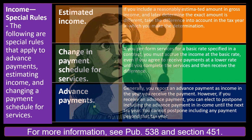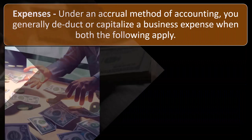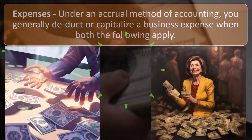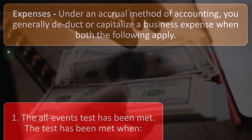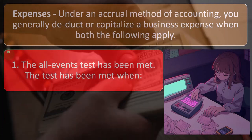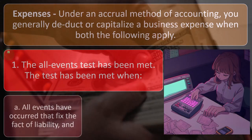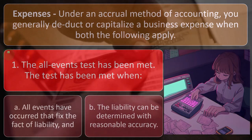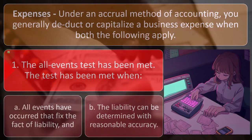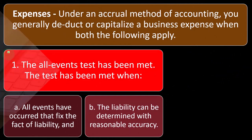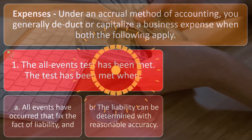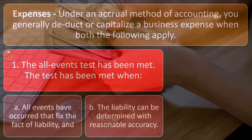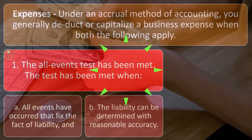That's probably more of an unusual situation specific to particular industries. Expenses under an accrual method of accounting: you generally deduct or capitalize a business expense when both of the following apply. One, the all events test has been met — all events have occurred that fix the fact of liability, and the liability can be determined with reasonable accuracy. We're on the expense side of things, where cash would be going out of the company, but on an accrual method we don't record it simply when cash goes out.